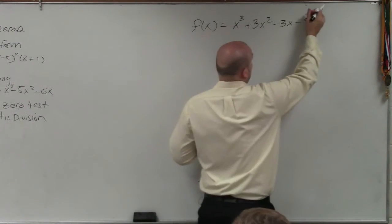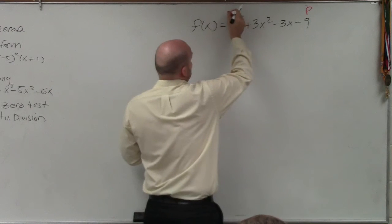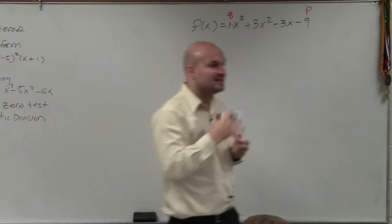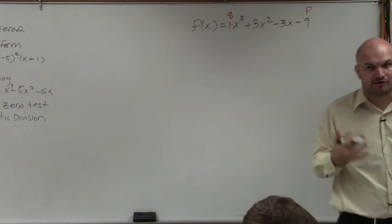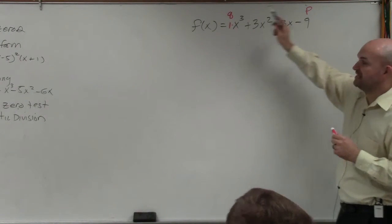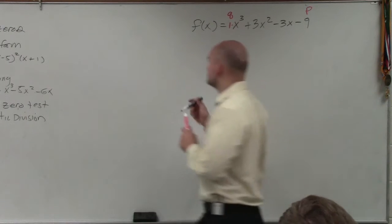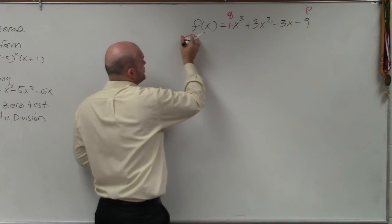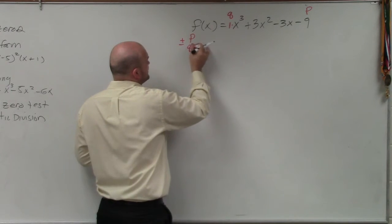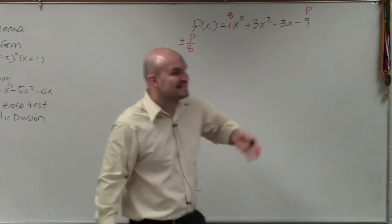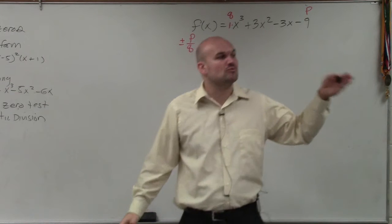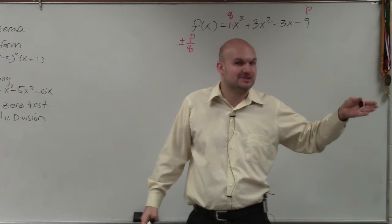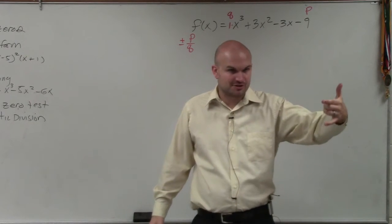The first rule is the rational zero test. And what the rational zero test is, there is a list of possible rational zeros in the form of the factors of p over q. So I'm just going to do plus or minus the factors of p over q. That's going to give me all the possible rational zeros. Make sure I'm not including irrational or imaginary zeros, only rational zeros.